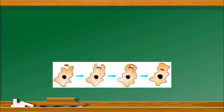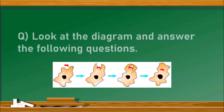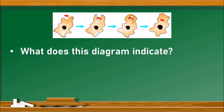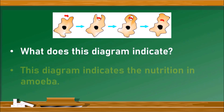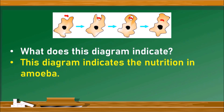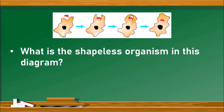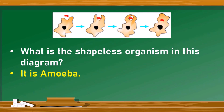The next is also a diagram-based question: look at the diagram and answer the following questions. The diagram shows amoeba obtaining food. The first question is: what does this diagram indicate? This diagram indicates nutrition in amoeba. The next question: what is the shapeless organism in this diagram? The shapeless organism is amoeba.